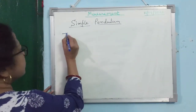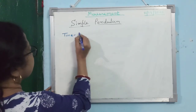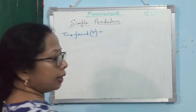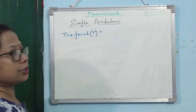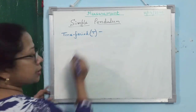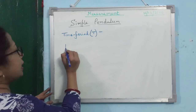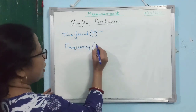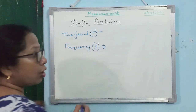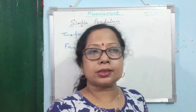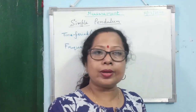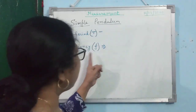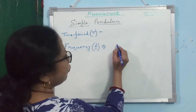The next topic is time period, generally denoted by T. Time period is the time needed for one complete oscillation. The SI unit of time period is seconds. The next term is frequency. Frequency is the number of complete oscillations in one second.